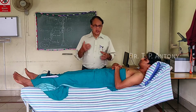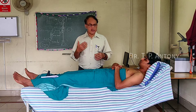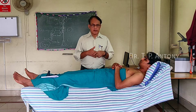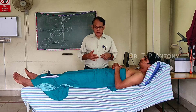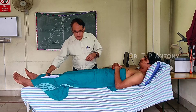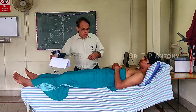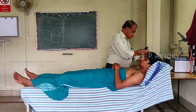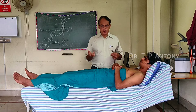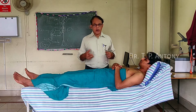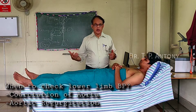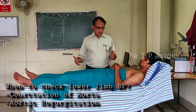Whenever a patient has symptoms suggestive of a fall on standing, immediately check standing blood pressure. Lower limb blood pressure is commonly taken when lower limb pulses are absent, when suspecting coarctation of the aorta, or when suspecting aortic regurgitation where you are looking for Hill's sign.